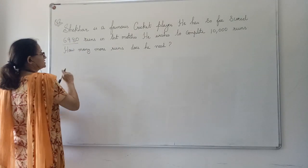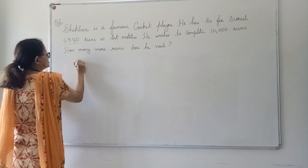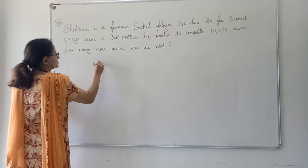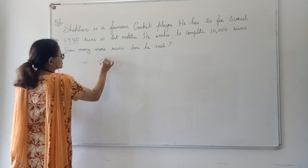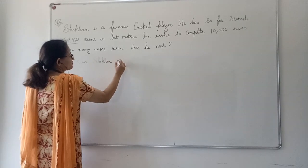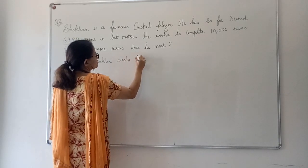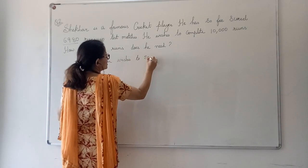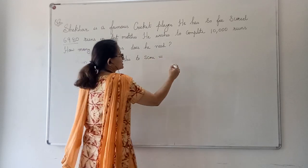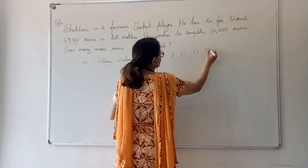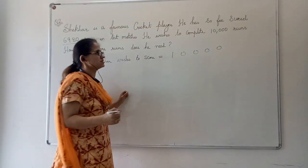Now, how to write? Runs Shekhar wishes to score. How many runs does he wish to score? 10,000. So, keep some gap between the digits so that we can do the calculation here itself.